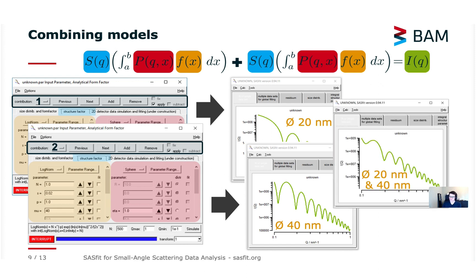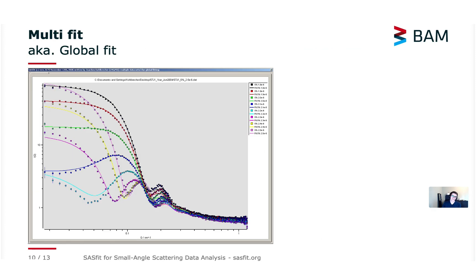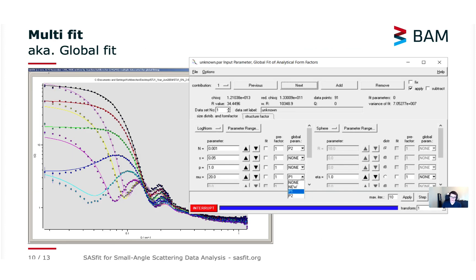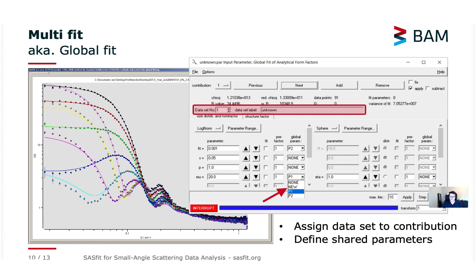And going one step further there's even a bit more complex configuration window for so-called global fitting which provides not only contributions but also data sets which can be assigned to contributions. This is highlighted here in red so you can assign to each contribution a certain data set for which it applies. This enables you to do some global fitting across multiple data sets multiple measurements as shown in the plot window in the background with the different colored curves which means you can load different measurements and for example different environmental settings or environments and fit all of them to a single model you can configure here.